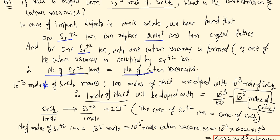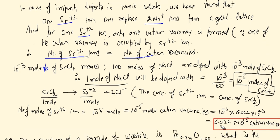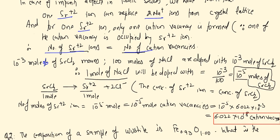From this we calculate: moles of Sr²⁺ ions = 10⁻⁵ mol, since 1 mole SrCl₂ gives 1 mole Sr²⁺ ions. Therefore cation vacancies = 10⁻⁵ mol. Converting to number: 10⁻⁵ × 6.022 × 10²³ = 6.022 × 10¹⁸ cation vacancies.